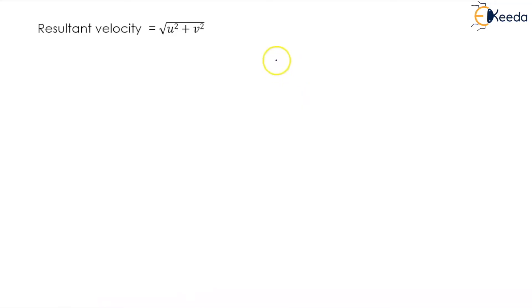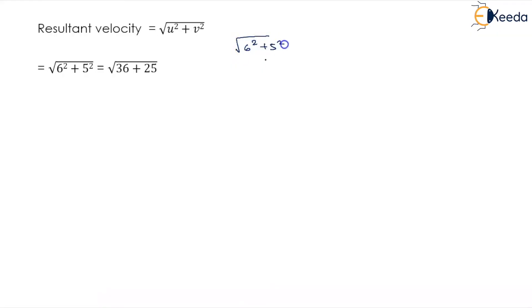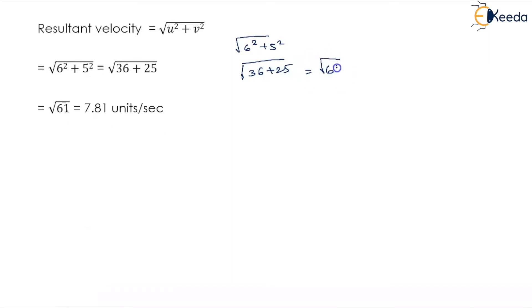The resultant velocity will be under the root of u squared plus v squared. So this becomes the square root of 6 squared plus 5 squared, which is equal to the square root of 36 plus 25, which equals the square root of 61, giving 7.81 units per second. This is your resultant velocity.